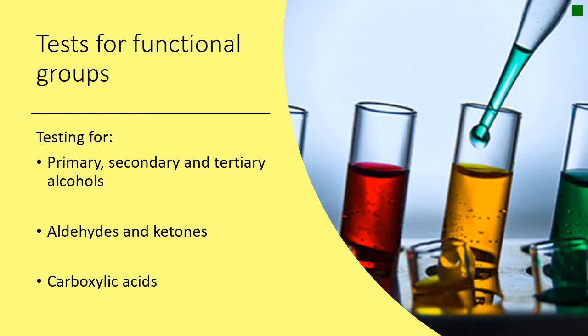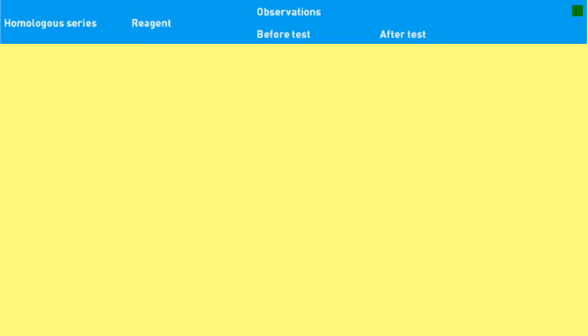We're going to do that by means of a table. The columns are the homologous series, i.e. those functional groups that we looked at in the previous slide, what reagents we need to do the test, and what it would look like before and after the reaction.